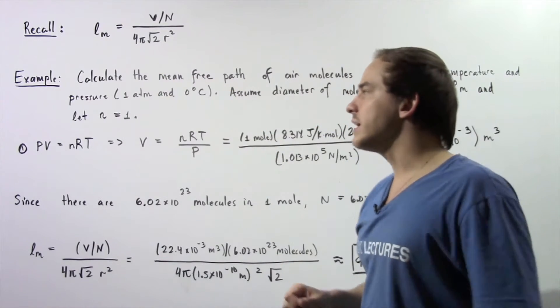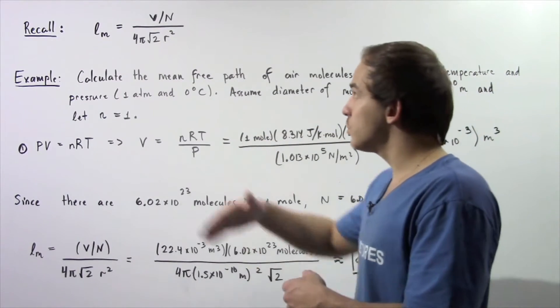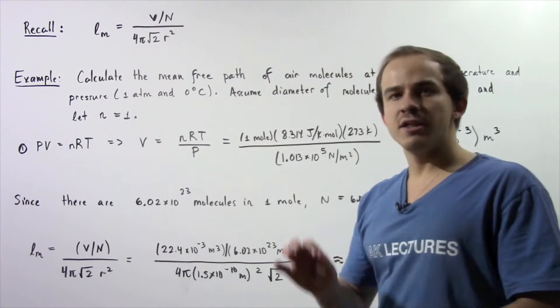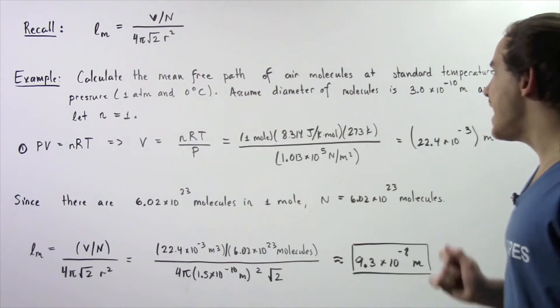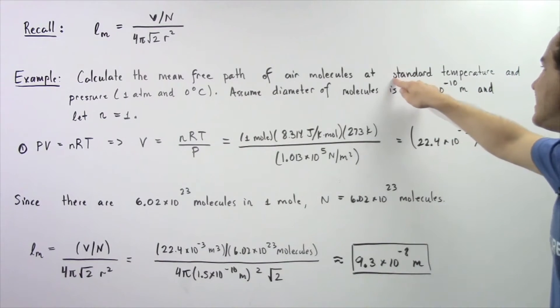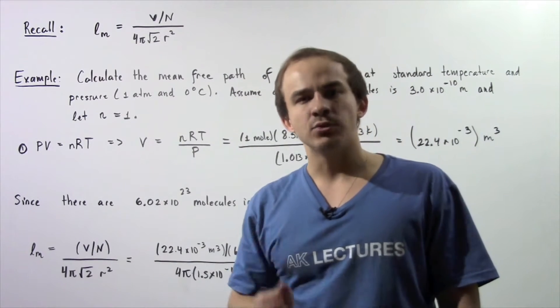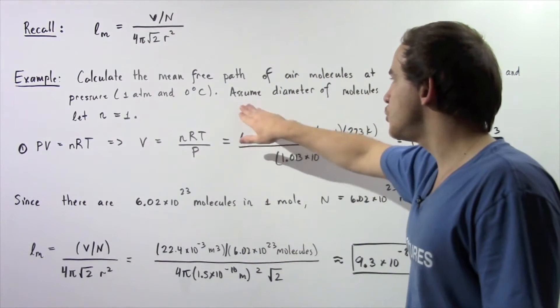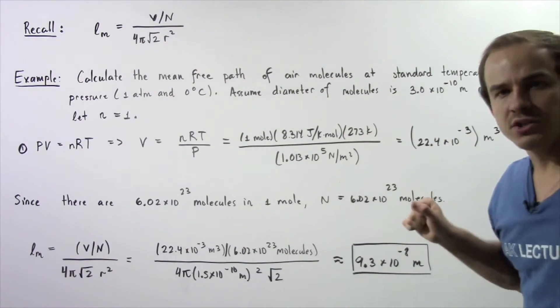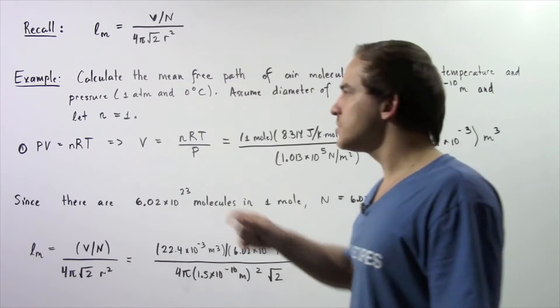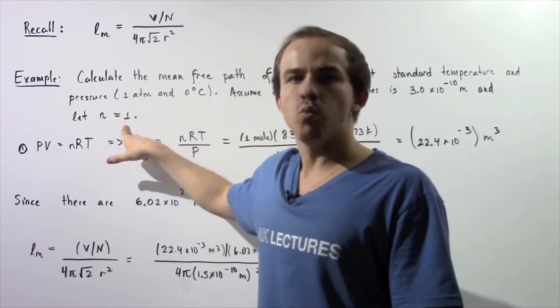Let's look at the following example in which we're going to utilize this equation. Calculate the mean free path of air molecules at standard temperature and pressure of 1 atm and 0°C. Assume that the diameter of the molecules is 3×10⁻¹⁰ meters and the number of moles n is 1.